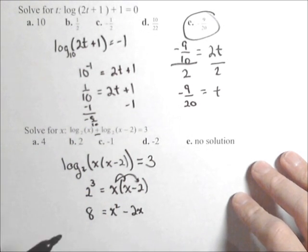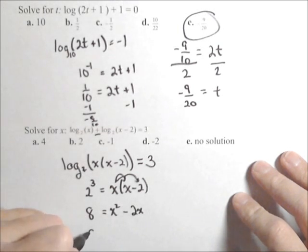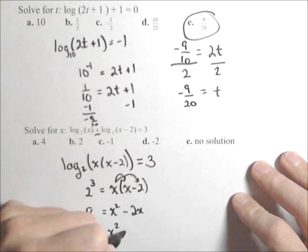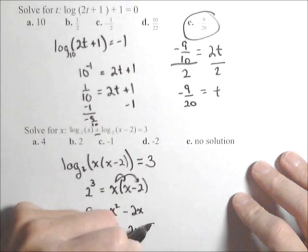You can try and take the square root now, you can try and add the two x, it's not gonna work. What we're gonna have to do is treat this as a quadratic, so we wanna get it equal to zero. So we have zero equals x squared minus two x minus eight.